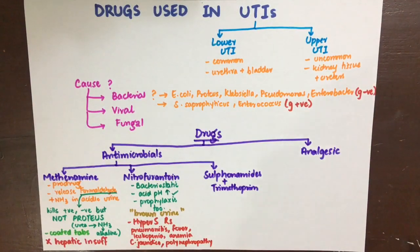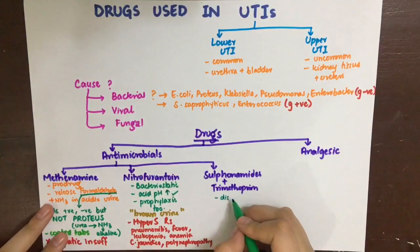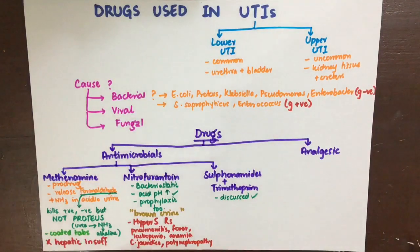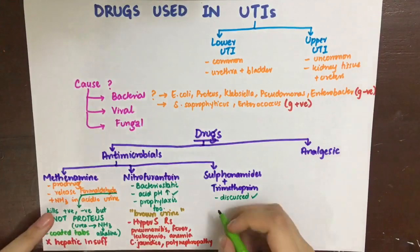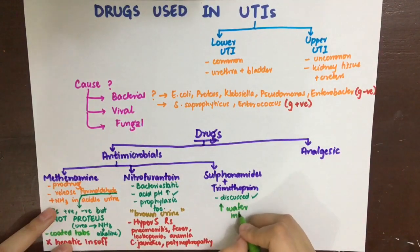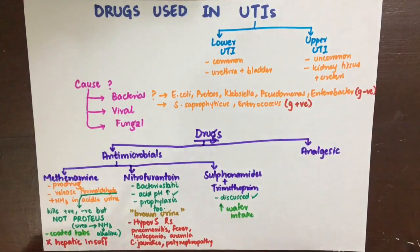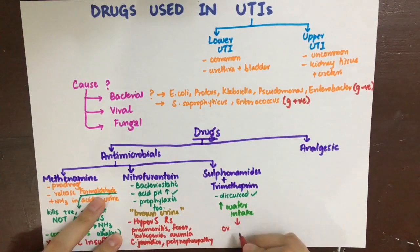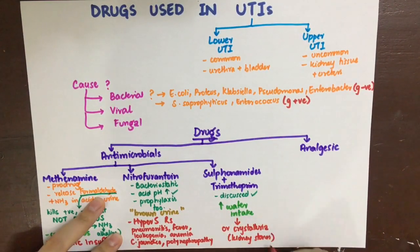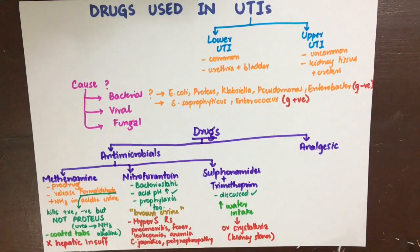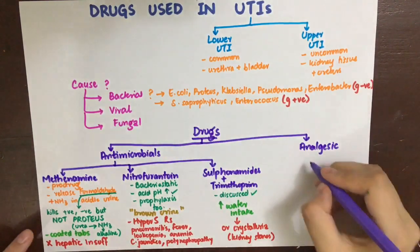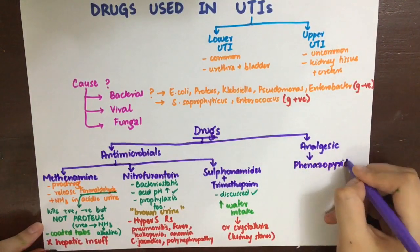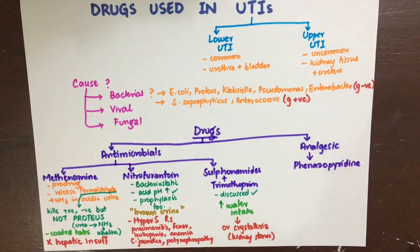These are important side effects to remember. Next are sulfonamides and trimethoprim, which we have already discussed. One key point: the patient should be told to increase water intake, because sulfonamides can cause crystalluria when the urine is concentrated, and also a kidney stone-like condition.